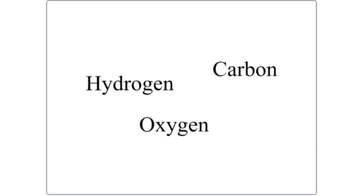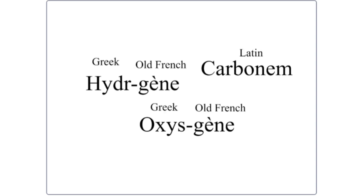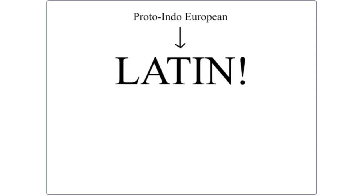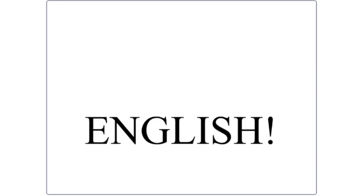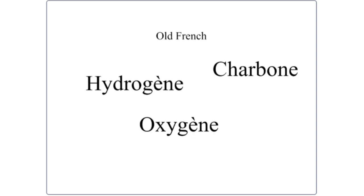Most of you probably know about hydrogen, carbon, and oxygen, and maybe some of you know that they come from Latin names — more specifically Old French, but we'll classify it as Latin for the sake of the video since French derives from Latin. In this video we're going to see what these words would look like if they were English words — basically if they evolved through Germanic.